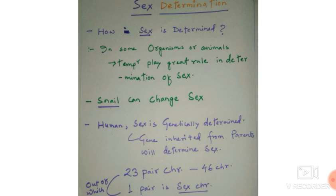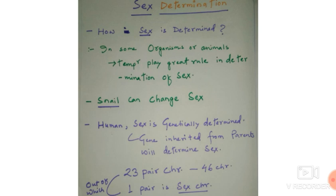One approach is temperature-dependent sex determination. These are organisms which depend upon temperature for the determination of their offspring — whether they are male or female. Temperature plays a vital role during zygote formation or embryonic cell formation during sexual reproduction. A specific amount of temperature is needed during zygote formation in those organisms, like reptiles, and this temperature decides whether their offspring will be male or female.